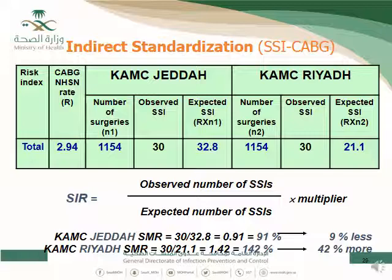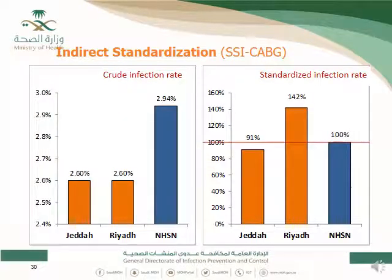The reason for this result is that Riyadh had a much higher number of surgeries in risk index category 0 — patients without additional risk factors who should not be getting infections. When compared to NHSN, Jeddah was 9% less (100 − 91) and Riyadh was 42% higher (142 − 100). This demonstrates that crude rates can be misleading, and SIR is a critical metric for adjusting for differences between hospitals or between a hospital and a benchmark.